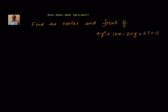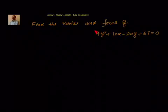So let us look at this example. Find the vertex and focus of 4y² + 12x - 20y + 67 = 0. We have to find out the vertex and focus of this particular parabola. First we see that there is y², which means this is of the form (y - k)² = 4a(x - h), because there is y².